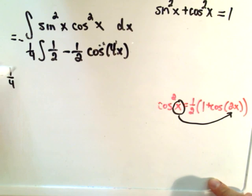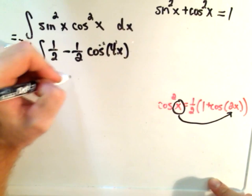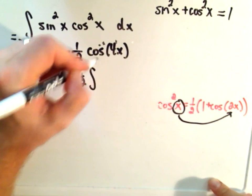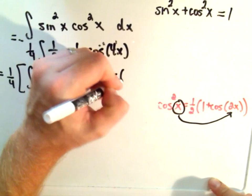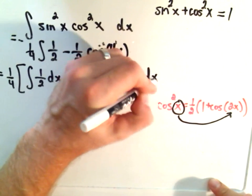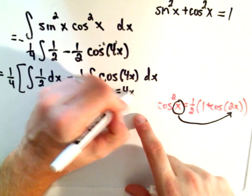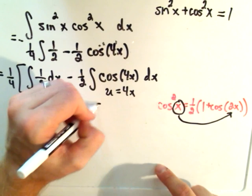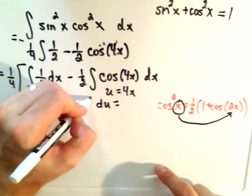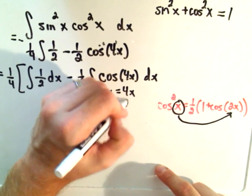You could split this up and do the one-half individually. For the cosine of 4x term, we'll do a u-substitution. Let u equal 4x. Du will be 4 dx, so divide to get one-fourth dx.